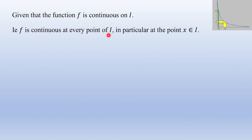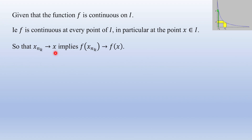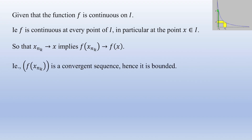Since f is continuous on I, it is continuous at each and every point of I, and in particular at the point x in I. By the sequential definition of continuity, since xₙₖ converges to x, it follows that f(xₙₖ) converges to f(x). So the sequence f(xₙₖ) is a convergent sequence, and every convergent sequence is bounded. Therefore the sequence f(xₙₖ) is bounded.